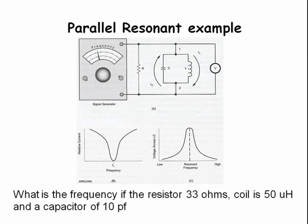In a parallel resonant circuit, the minimum current flows through the circuit at resonance.